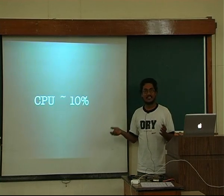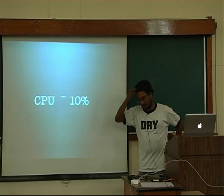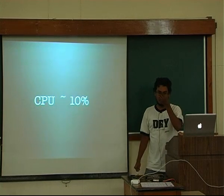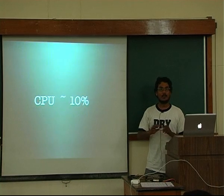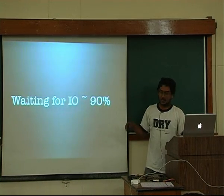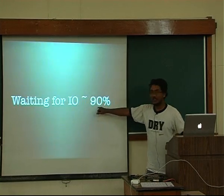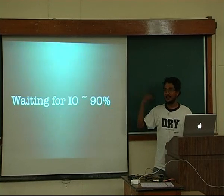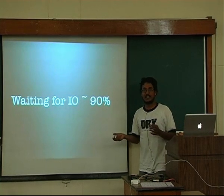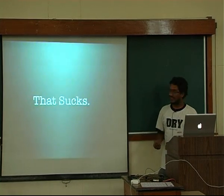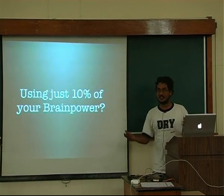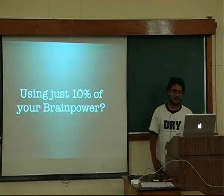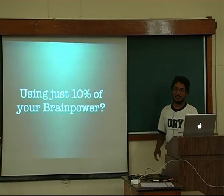If you look at your uptimes on your servers, I run a bunch of big apps and I haven't seen more than about 10% CPU utilization. That means 90% of your time is basically waiting for IO — returning data, passing the data. That sucks big time, because you're just using 10% of your beefy server which you're paying like $1 an hour on Amazon. It sucks to actually use 10% of your brain power as well.